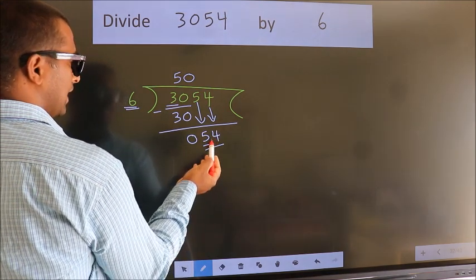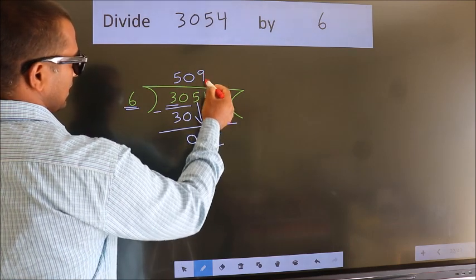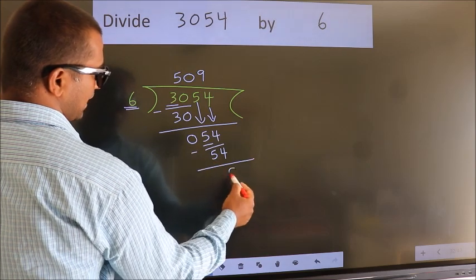So, 54. When do we get 54? In 6 table, 6 nines, 54. Now, we subtract. We get 0.